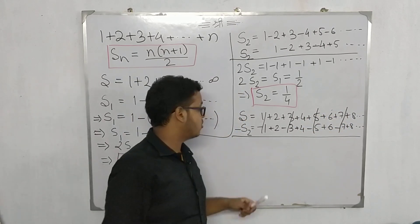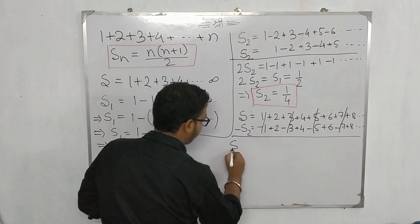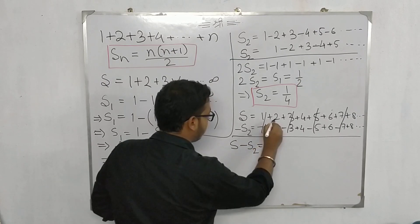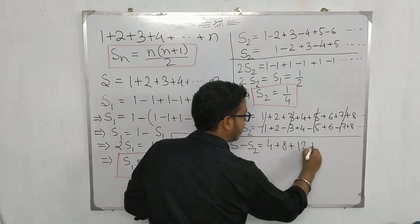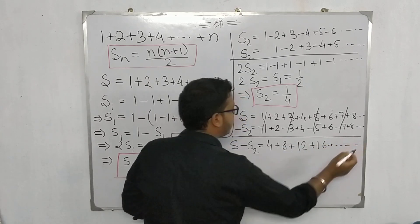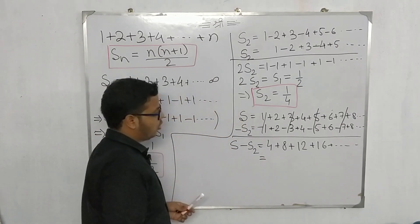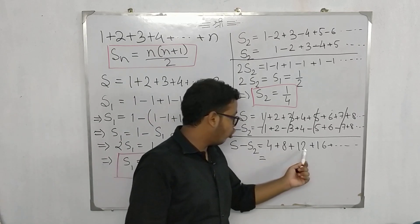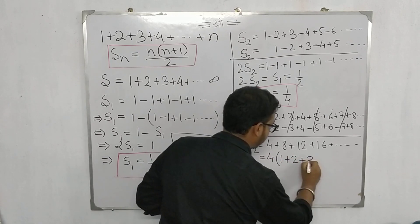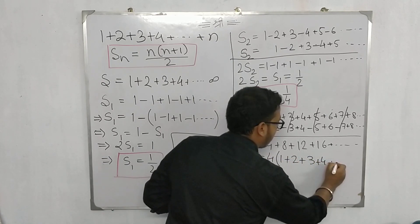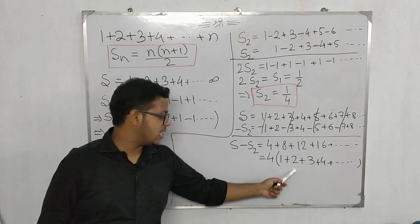Let's do the calculation. If you see, you will notice that all these odd terms are actually getting cancelled out, and the even terms will get added up. So we have s - s₂, which is 4+8+12+16 up to infinity. There is a very small manipulation over here which we have to do. We will take 4 common from the series.